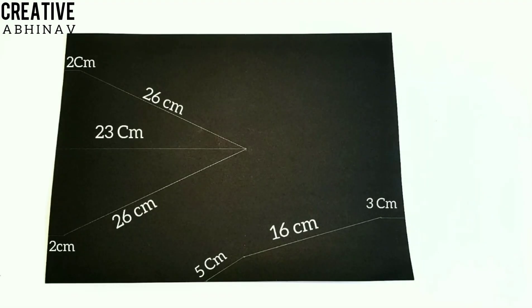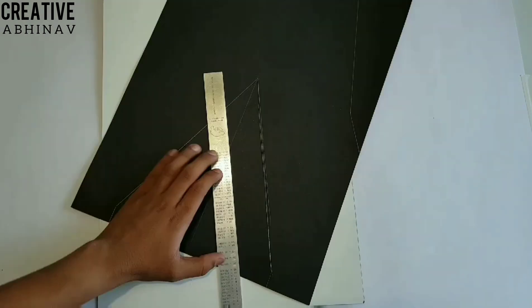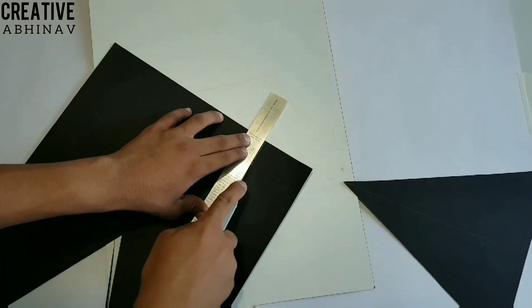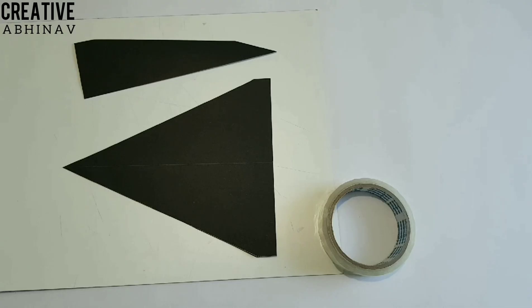Now take a black paper sheet, then we have to mark some dimensions of our paper airplane. Then we have to cut out these dimensions with the help of a cutter like this. Then we have to paste paper pieces with the help of cello tape.